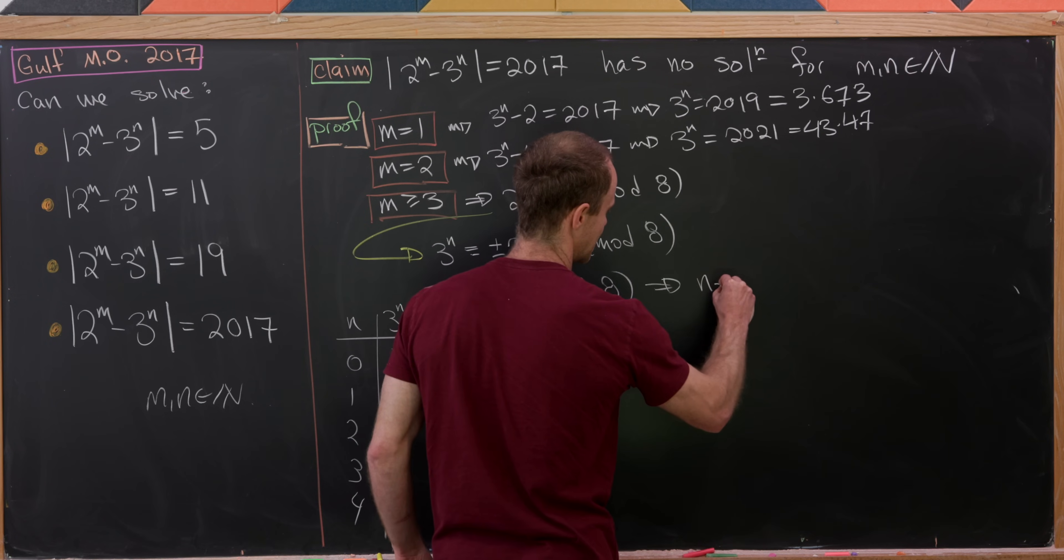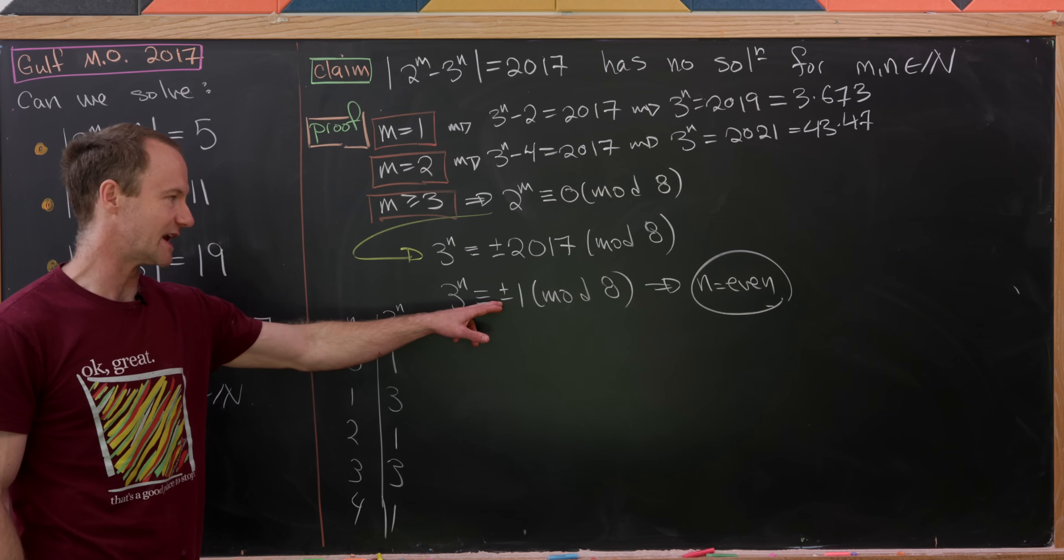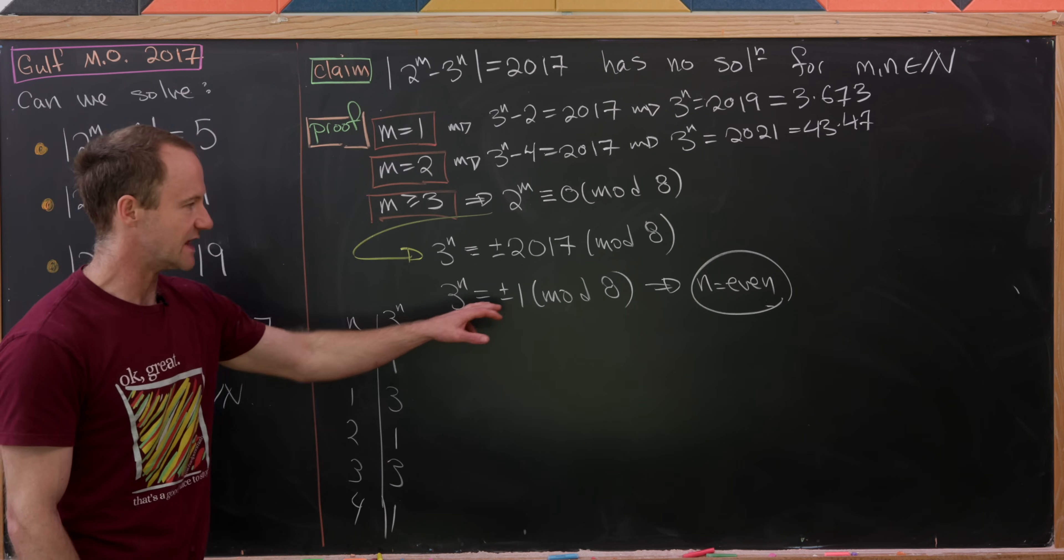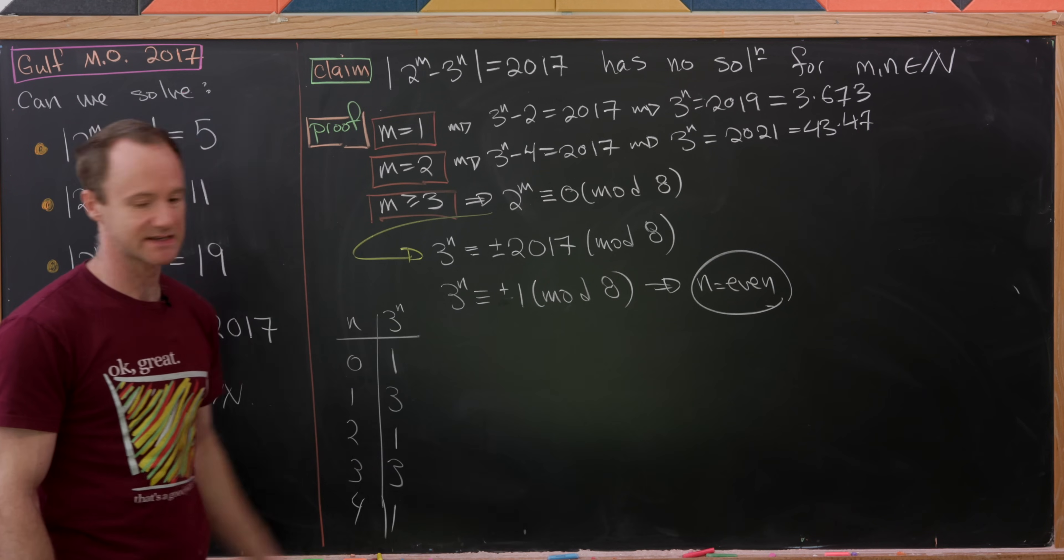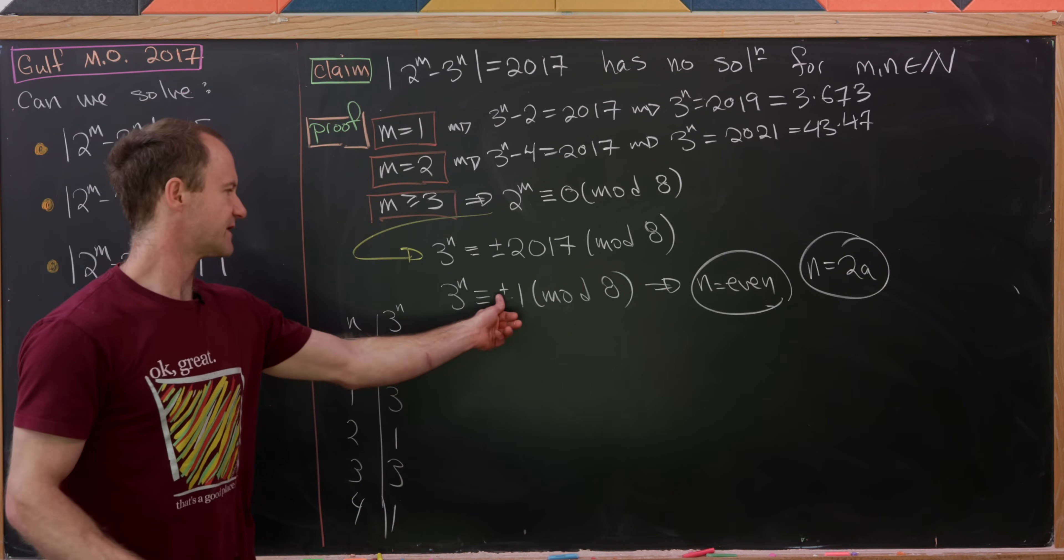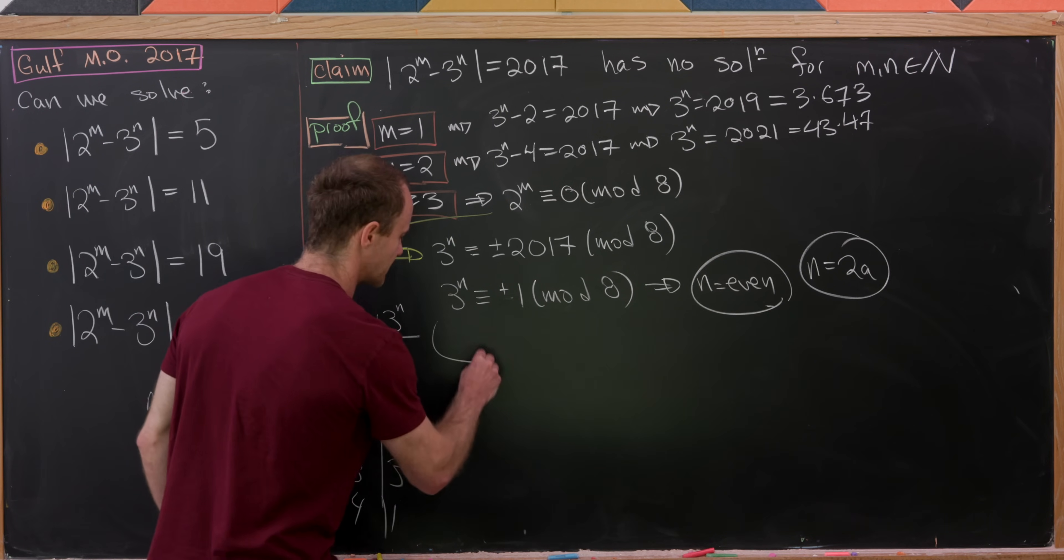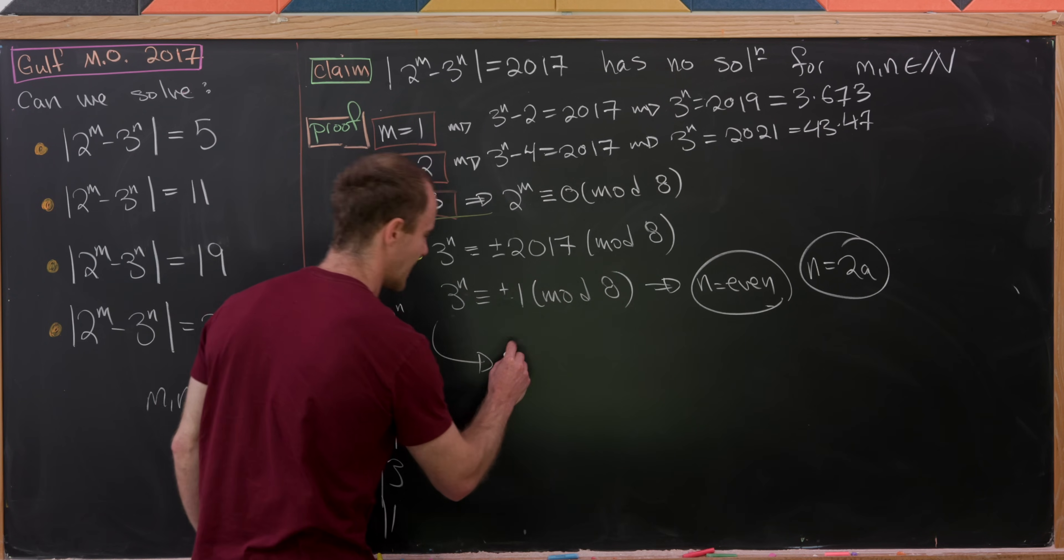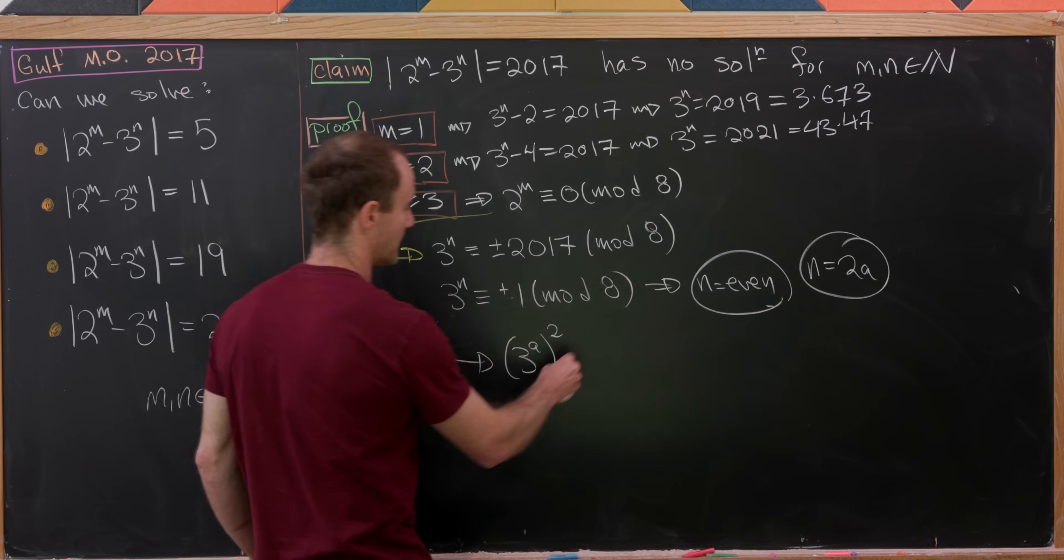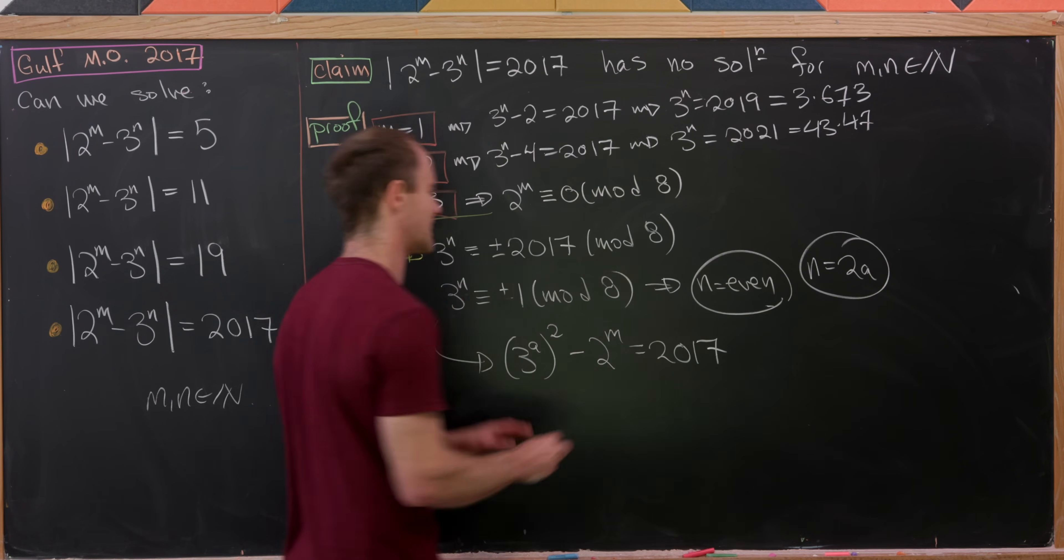So that means that n is an even number. Furthermore, it tells us that we cannot have a minus 1 mod 8 here because we never achieved a 7 over here which is minus 1 mod 8. So we know that n is even and we also know that this minus sign is impossible. So now if we set n equal to 2 times a and use the fact that we can't get a minus in here drifted back up into our original equation, that means that our equation really looks like this. 3 to the n but n is 2a so that will be 9 to the a but maybe I'll write that as 3 to the a squared and then minus 2 to the m equals 2017. So that's our equation at the moment.